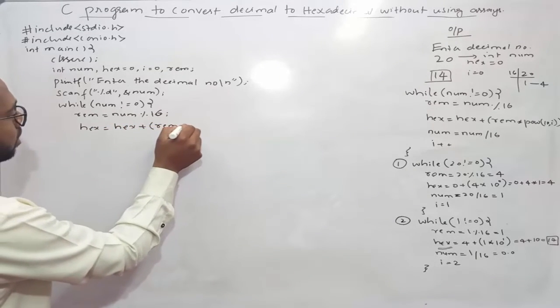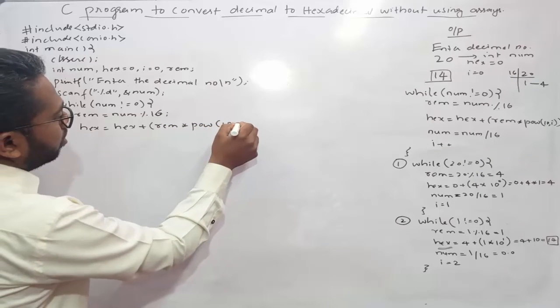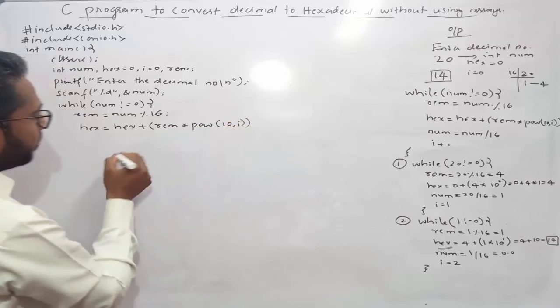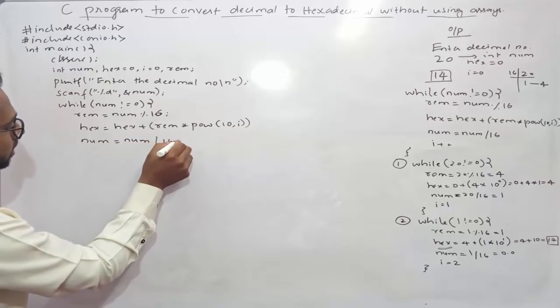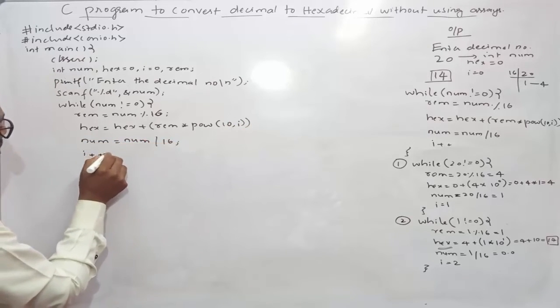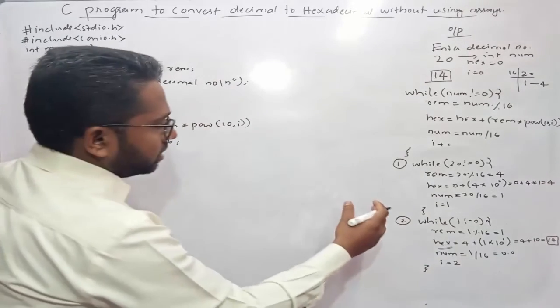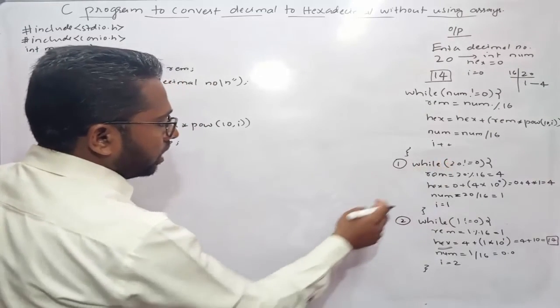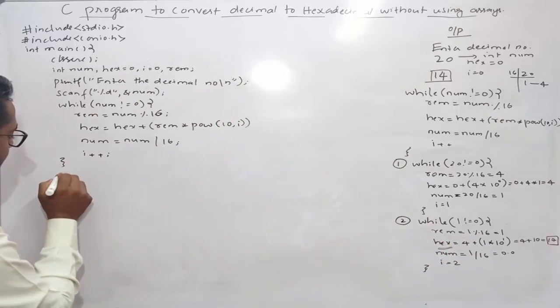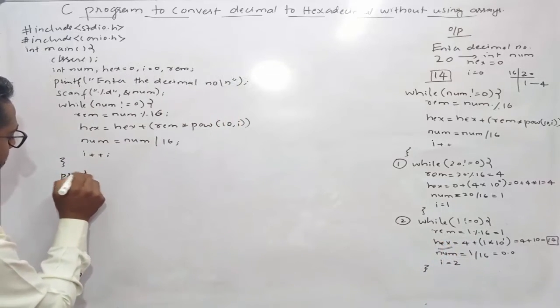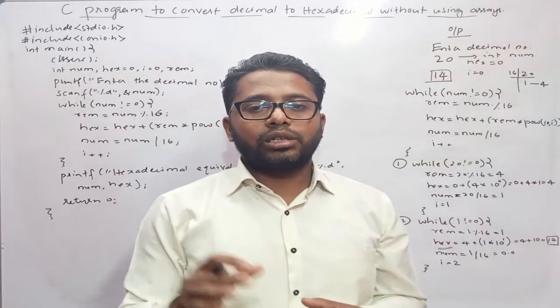Remainder equals num mod 16. Then hex equals hex plus remainder times power of 10 comma i. Next num equals num by 16, i plus plus, bracket closed. After completing all iterations till the value of num becomes 0, the answer 14 gets stored inside hex variable. So now I need to print this hex, bracket closed.